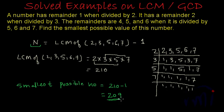The smallest possible number will be 210 minus 1, that is 209. When you divide 209 by 2, you will get remainder 1, and if you divide by 3, you are going to get remainder 2.